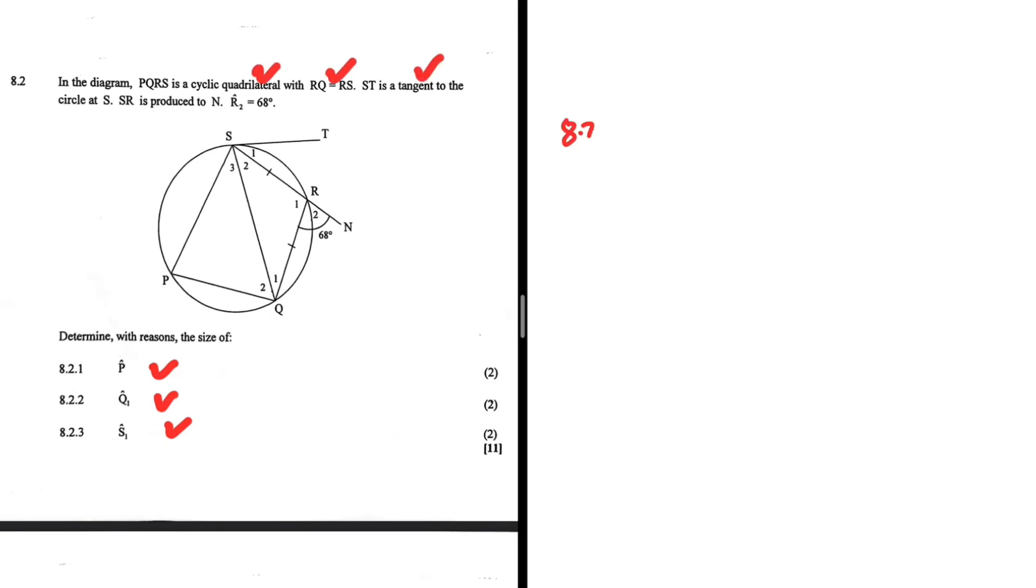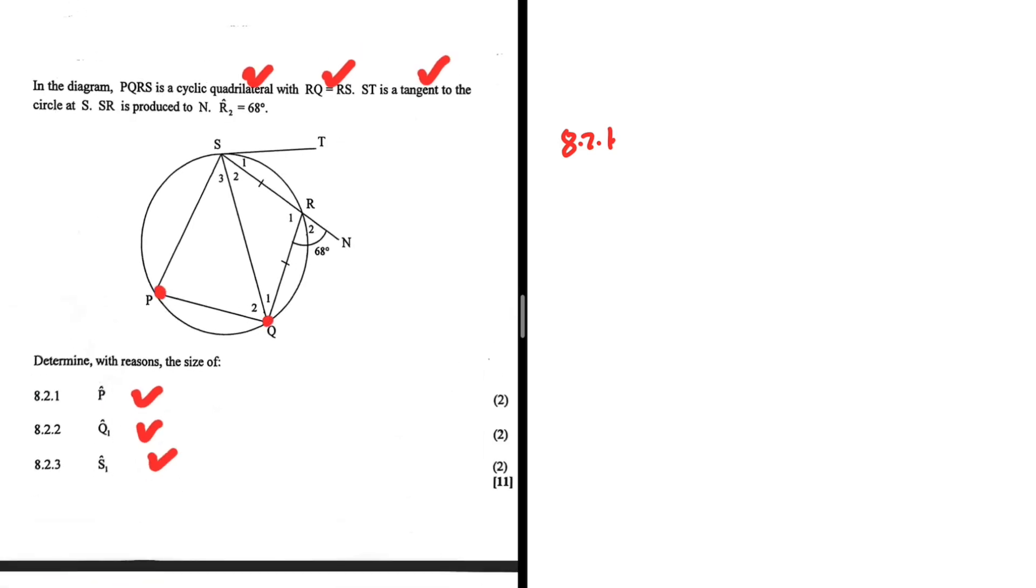So the first question, 8.2.1, determine with reasons the size of angle P. So what is our first keyword? PQRS is a cycling quad.